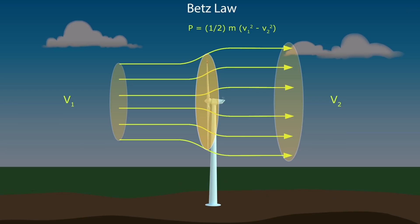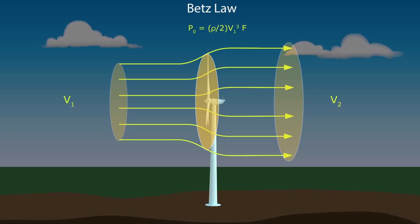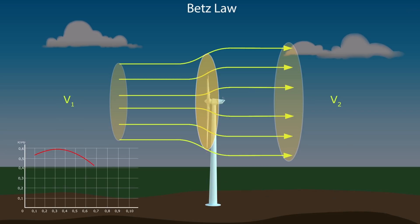According to Newton's second law, the power extracted from the wind by the rotor equals the mass times the drop in wind speed squared. Substituting mass into this expression, we get an expression for the power extracted from the wind. Comparing with the total power P0 in the undisturbed wind streaming through the same area F with no rotor blocking the wind, the ratio P/P0 equals one-half times (1 − V2/V1)² times (1 + V2/V1). Plotting P/P0 as a function of V2/V1, the function reaches its maximum at V2/V1 = 1/3, giving a maximum extractable power of 0.59, or 16/27, of the total power in the wind.